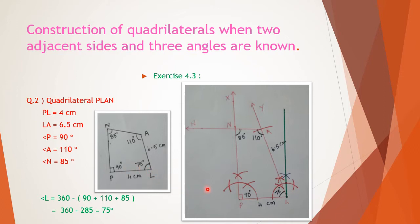First we draw a rough sketch and mark all values. We take side PL at the bottom — 4 cm. At P it is 90°, at L we found 75°, at A it is 110°, and at N it is 85°. This is our rough sketch, and as per the rough sketch we will do the construction.